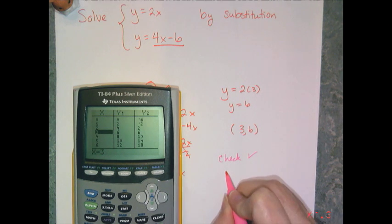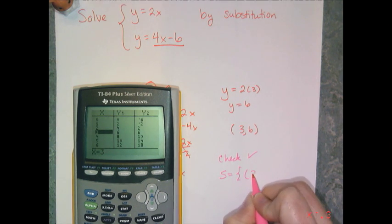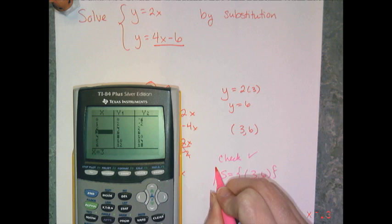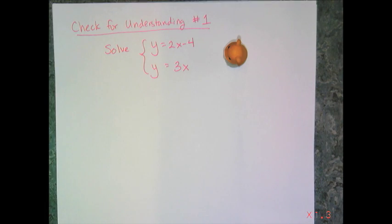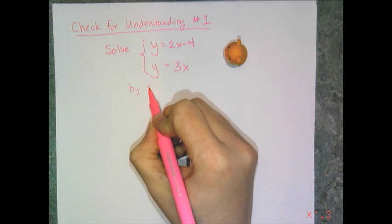So I've checked it, therefore I know that my solution is indeed the point (3,6). Box it off, happy face. Now why don't you try to solve this example. It is also a one hamster level example. So I want you to solve this system: y equals 2x minus 4 and y equals 3x by substitution.